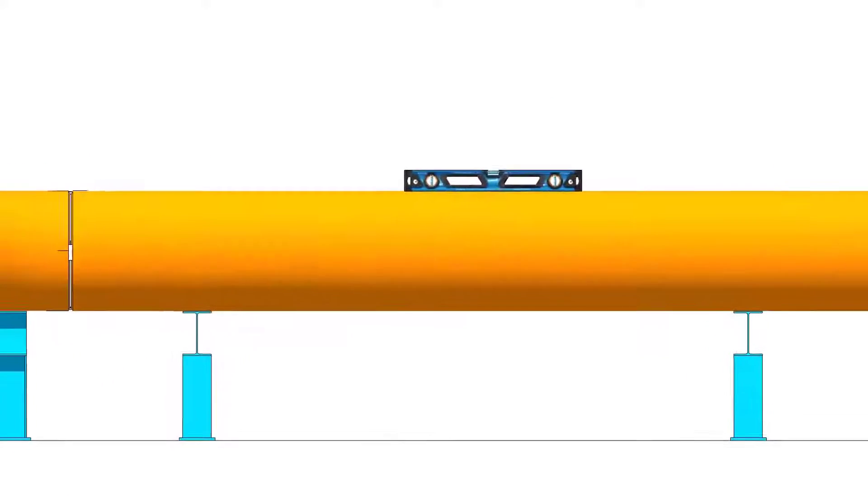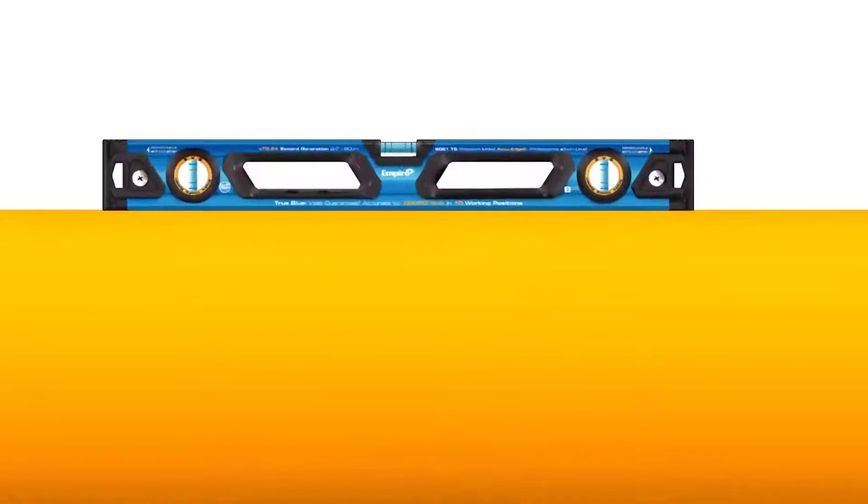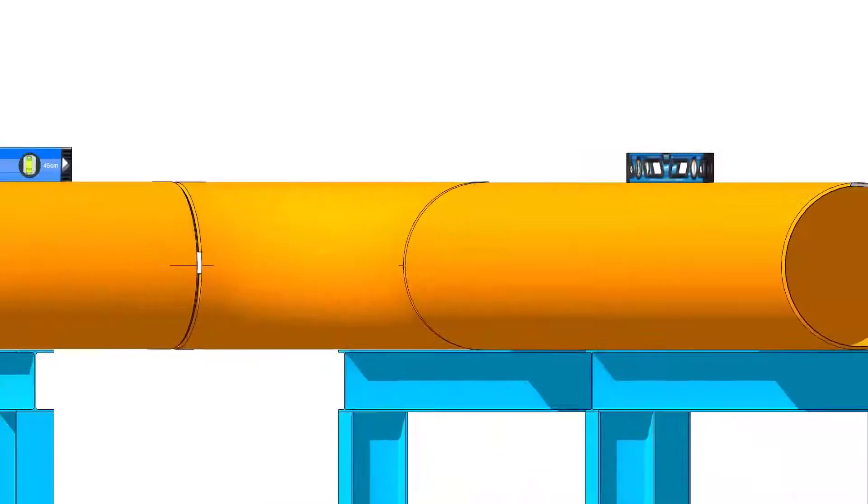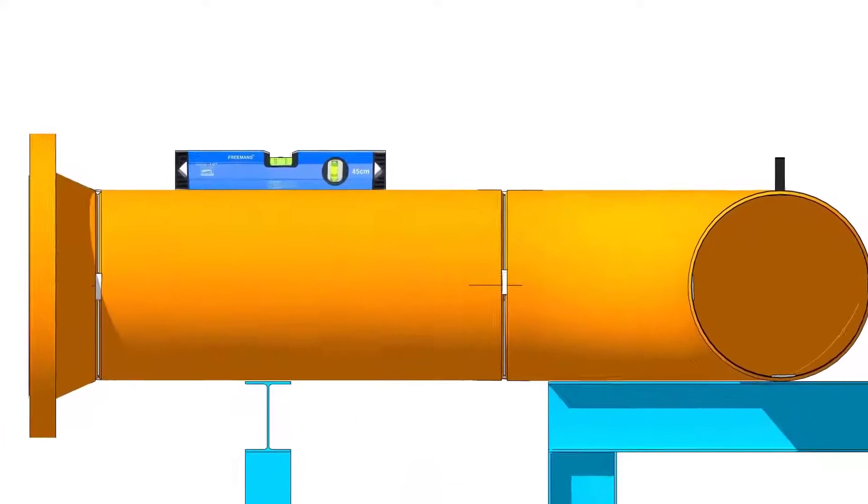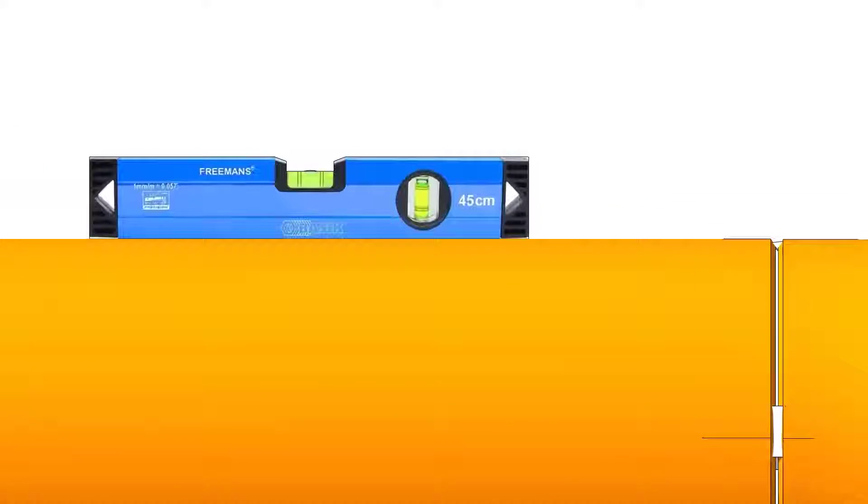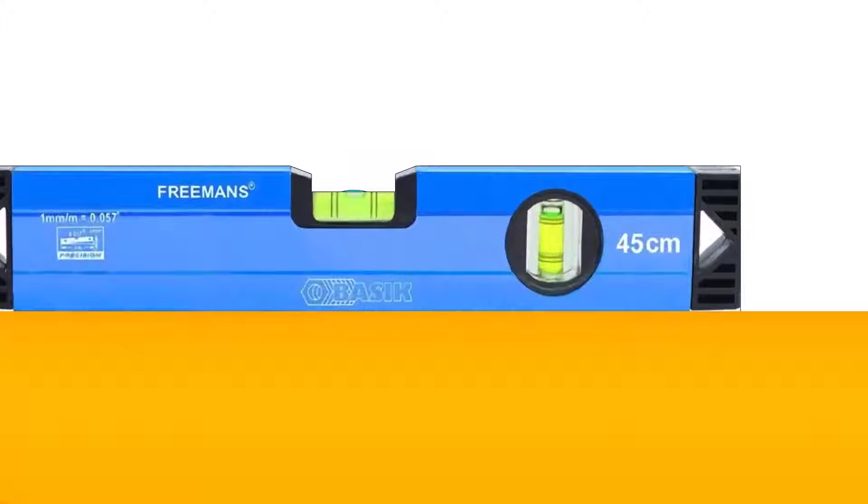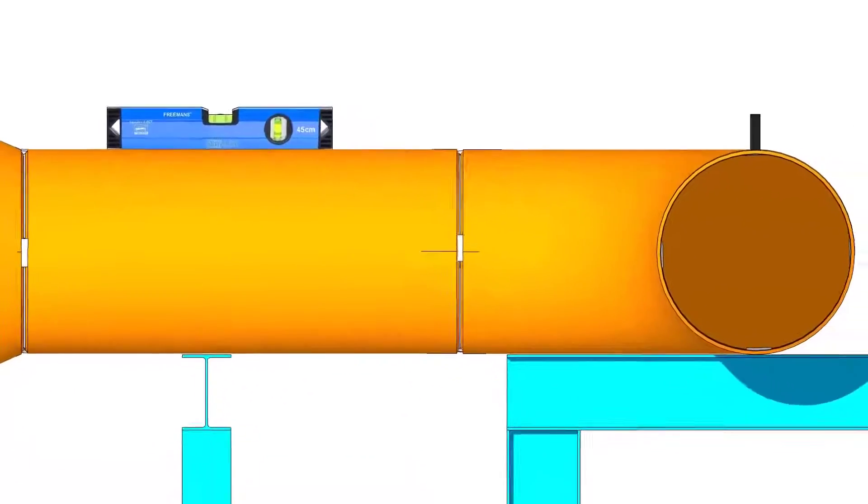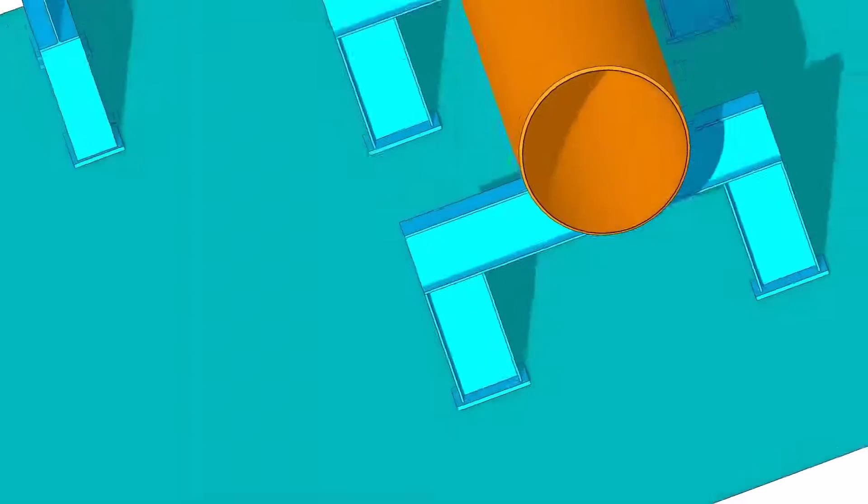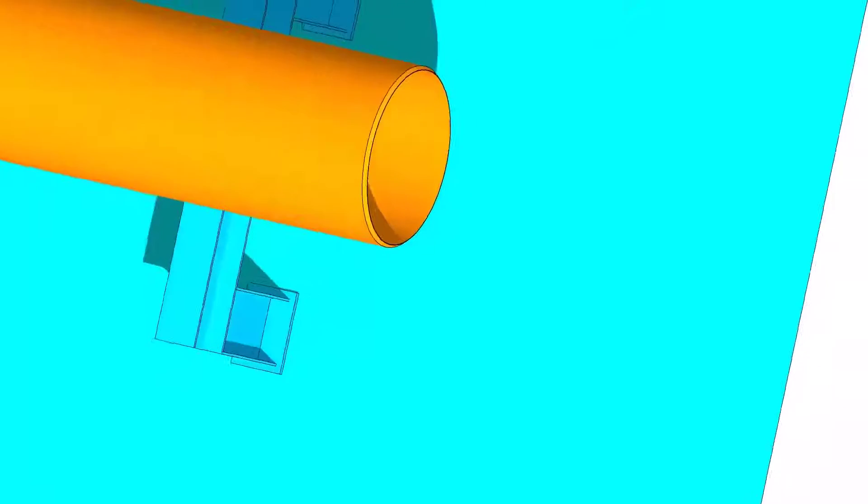Let us level the pipe first. Check the squareness of the pipe face.